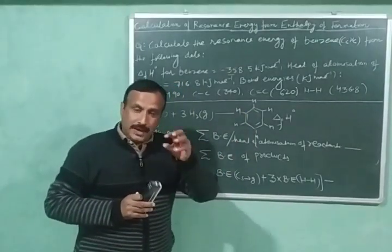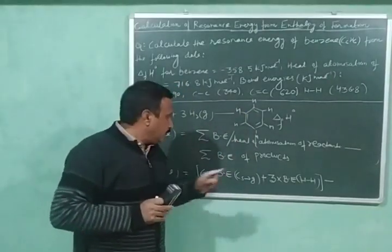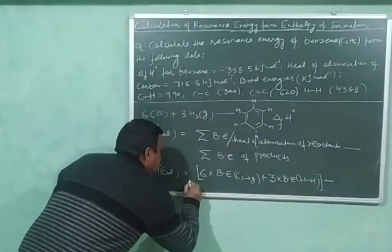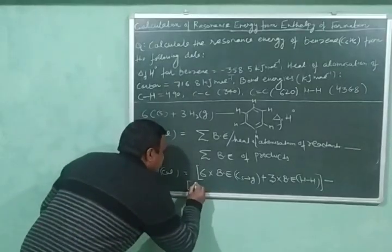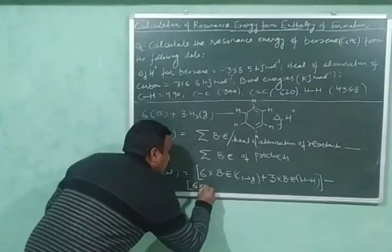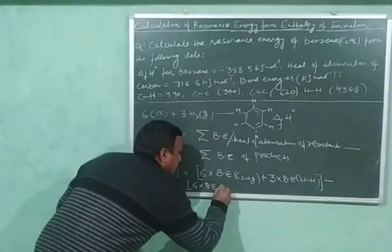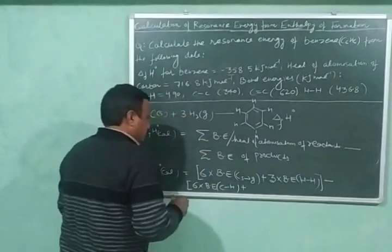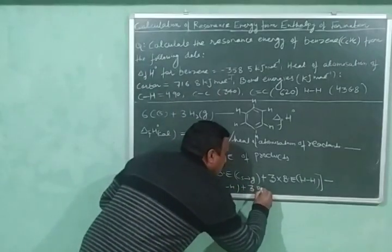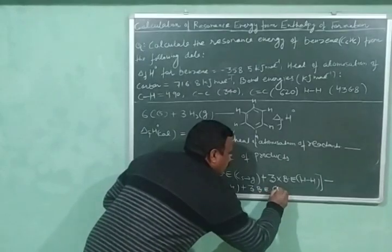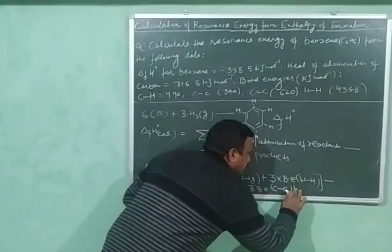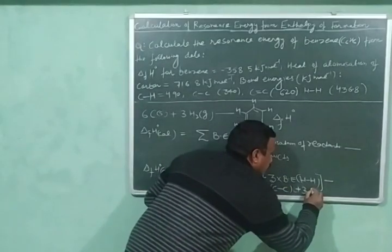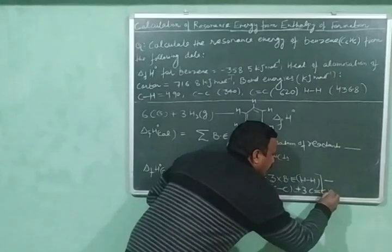The bond energy of benzene will be calculated as: minus 6 times the bond energy of C-H bond, plus 3 times the bond energy of carbon-carbon single bond, plus 3 times the bond energy of carbon-carbon double bond.